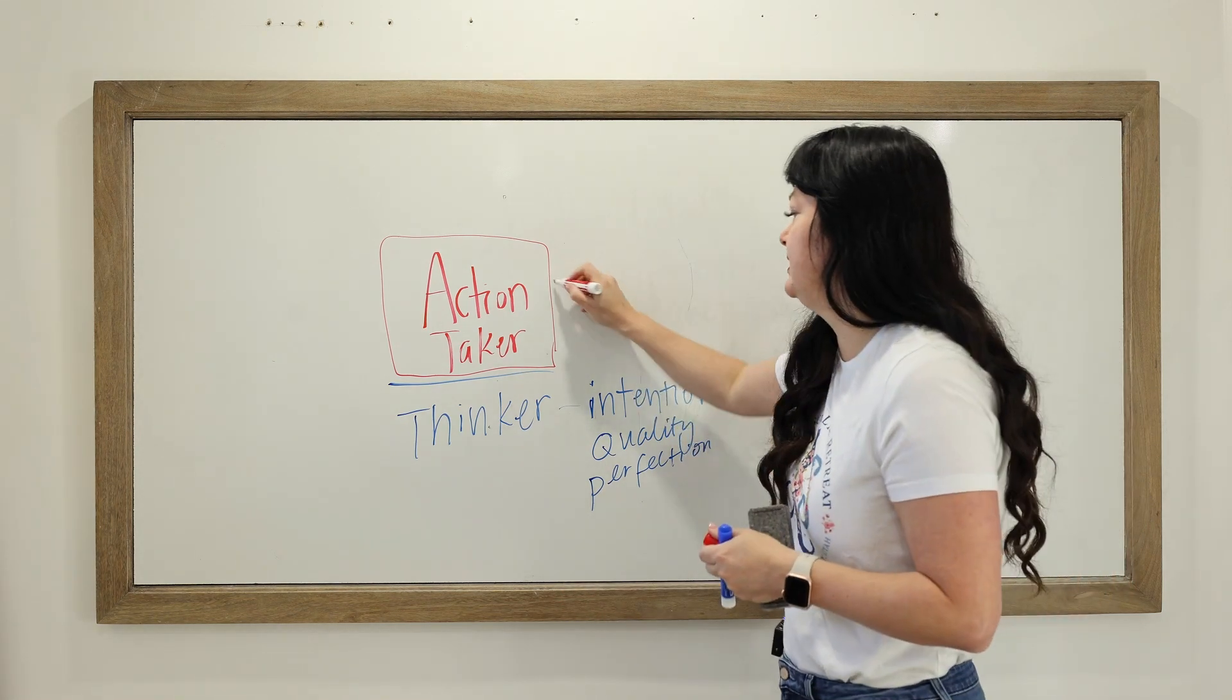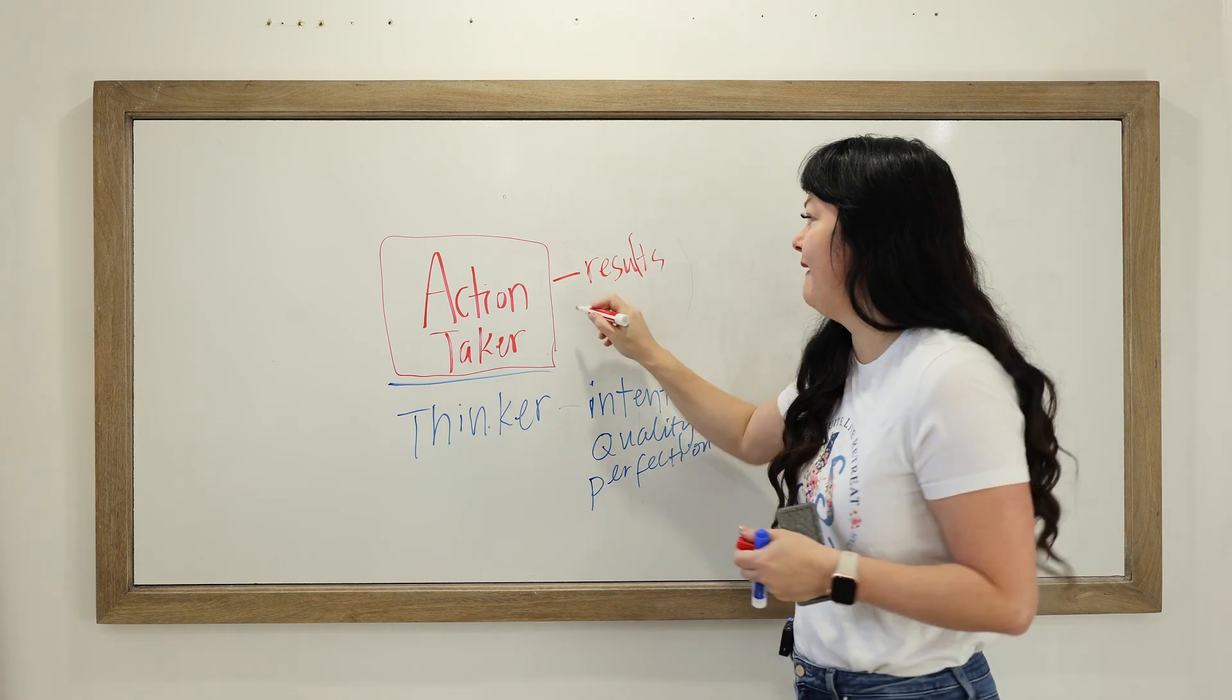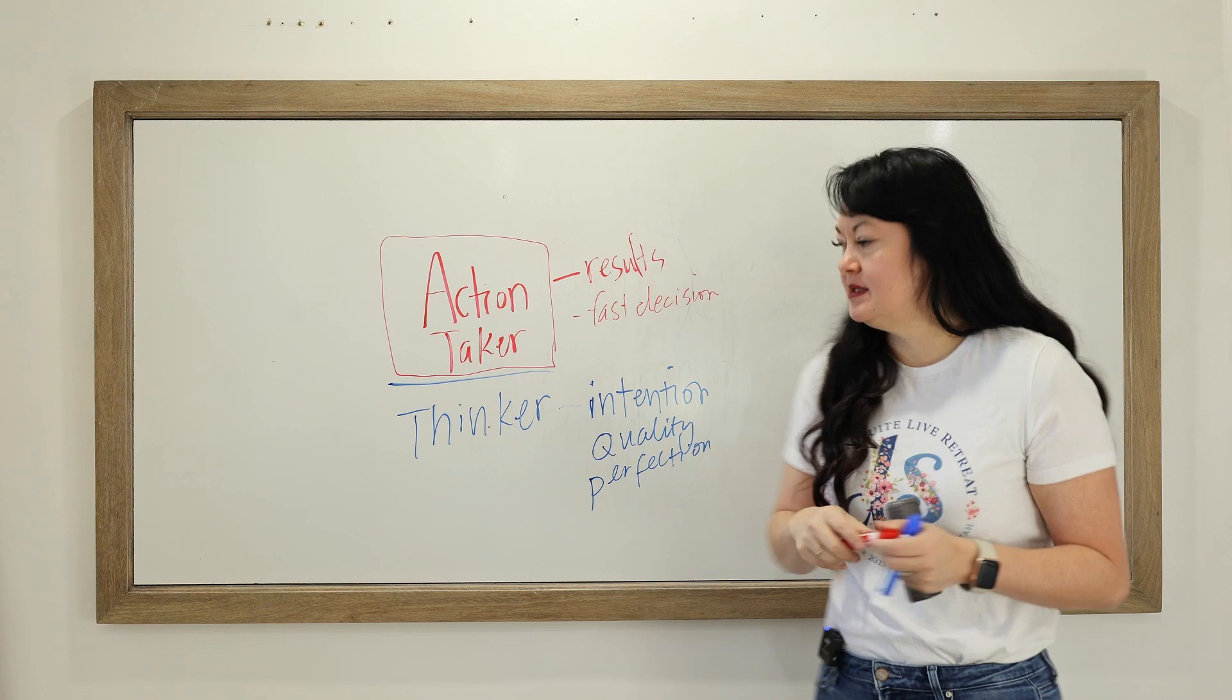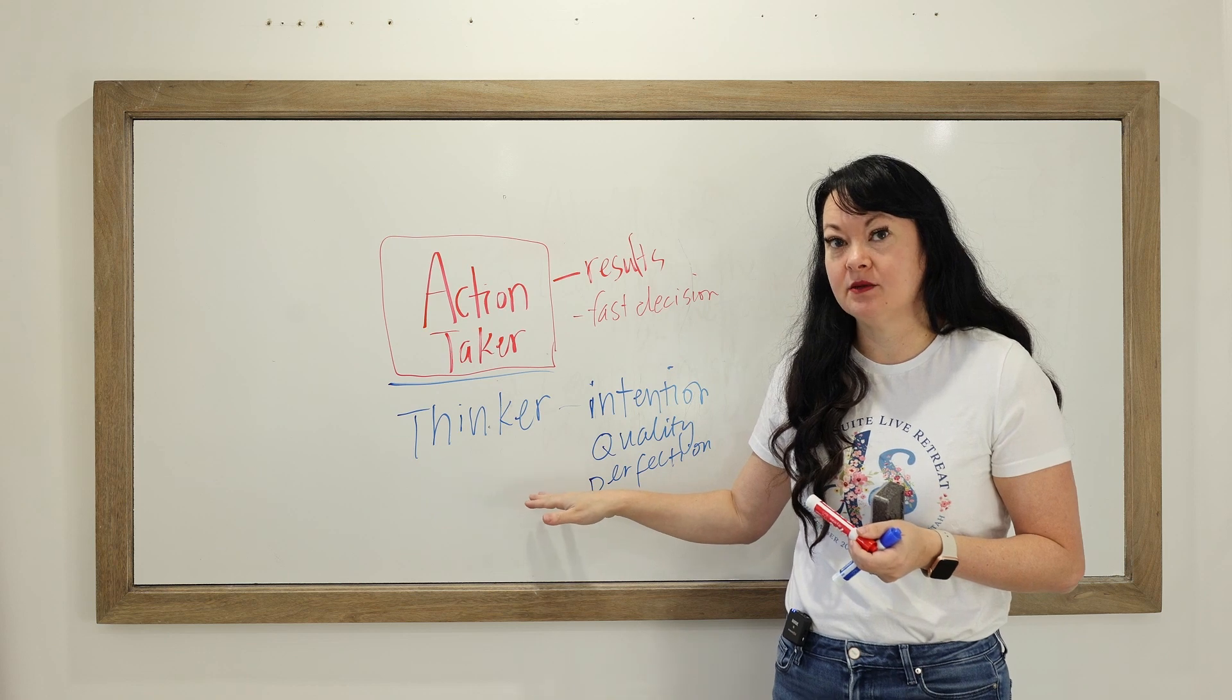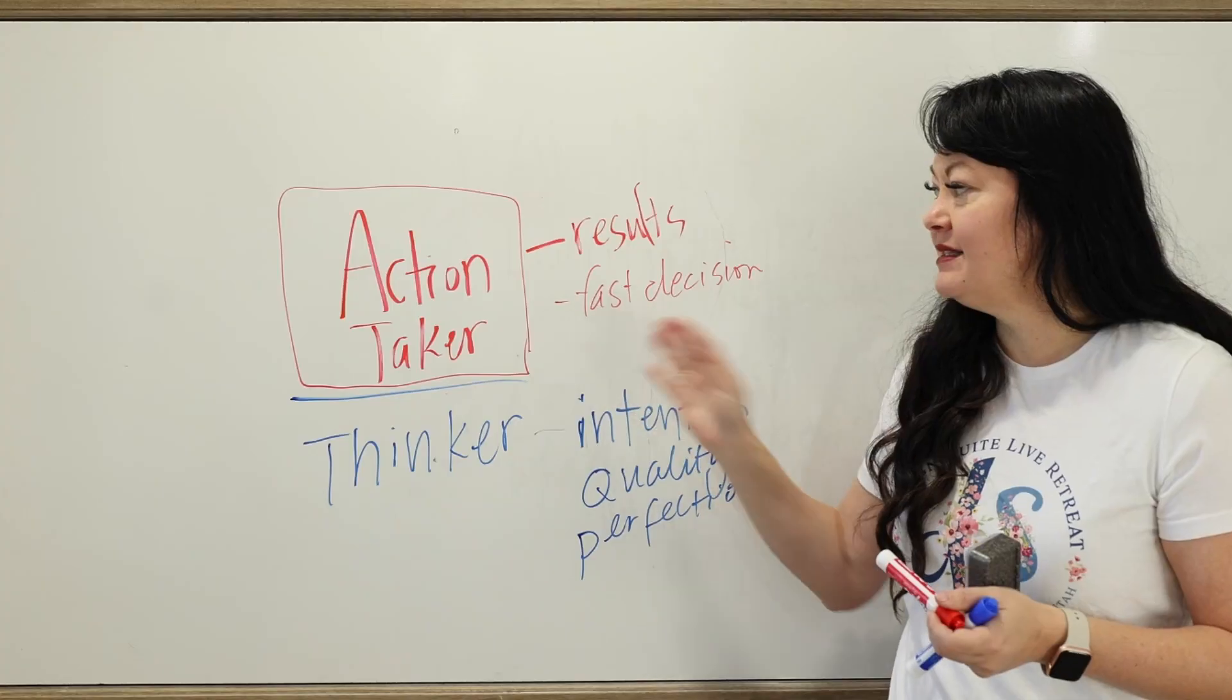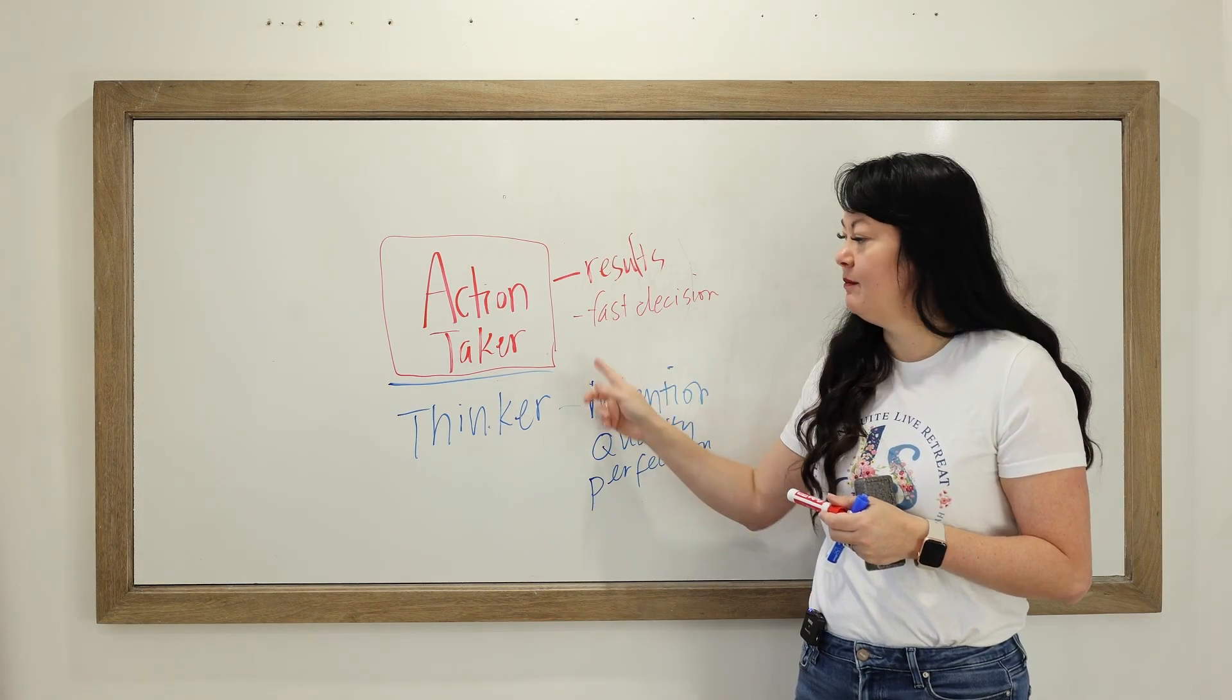Versus action takers tend to be results driven. They're paying attention to the results. They tend to be fast decision makers, which I think is key because sometimes we will labor. Let me give you an example. If I labor over a decision for five days and I'm just like, I can't make a decision, I'm kind of lost, I don't know if I want to do it, and then I finally make a decision after five days, the fast action taker, maybe they make a decision after one day.